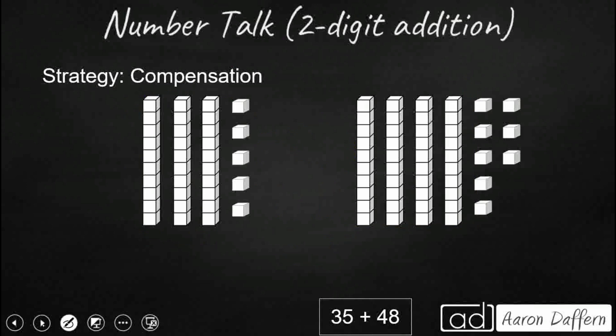Finally, we can use compensation. Now what compensation does is it actually changes our addends. So we take a look at both addends. We see which one is closest to the next 10. And this is 48. I just need two more to get to the next 10. So what I'm going to do is I'm going to steal two from my 35.